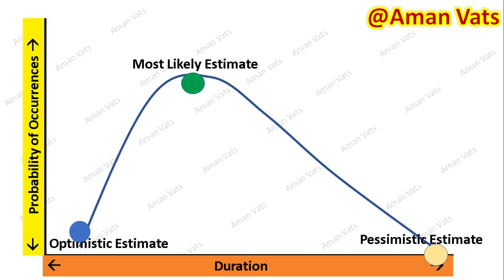In three-point estimation, we have three estimates: optimistic, pessimistic, and most likely. Most likely is the scenario considering resource availability, productivity, dependencies, and interruptions — you arrive at an estimate stating this is most likely the time to complete this particular activity. Optimistic uses the best-case scenario, with best practices and full availability of everything you need.